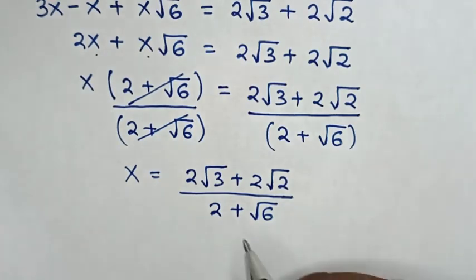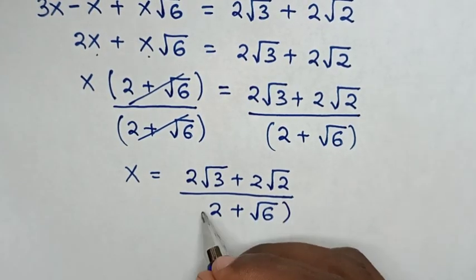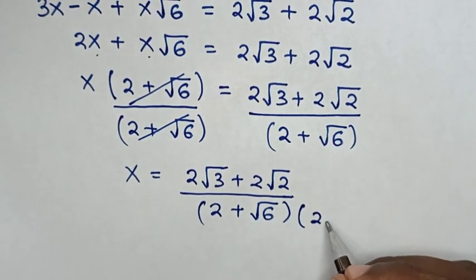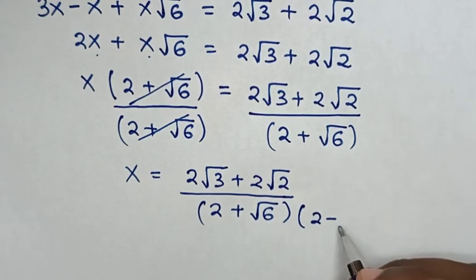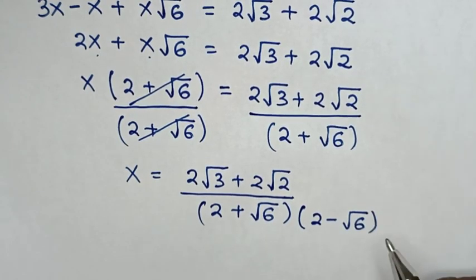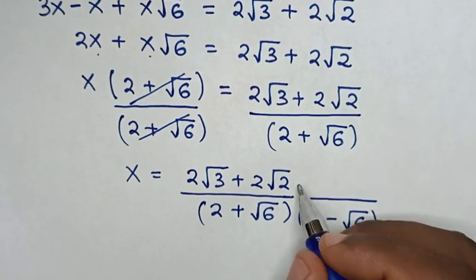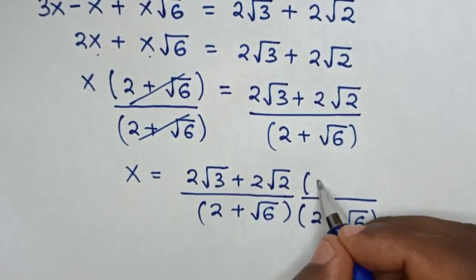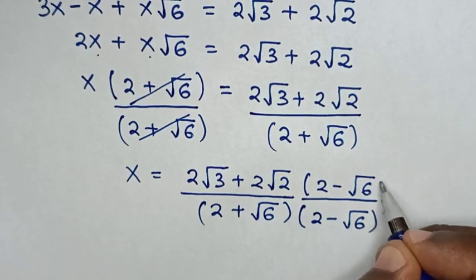Then in the next step we'll rationalize the denominator, so we'll multiply by (2 minus square root of 6), because here it's positive, so it will be minus square root of 6. We'll multiply by the same (2 minus square root of 6) in the numerator as well.